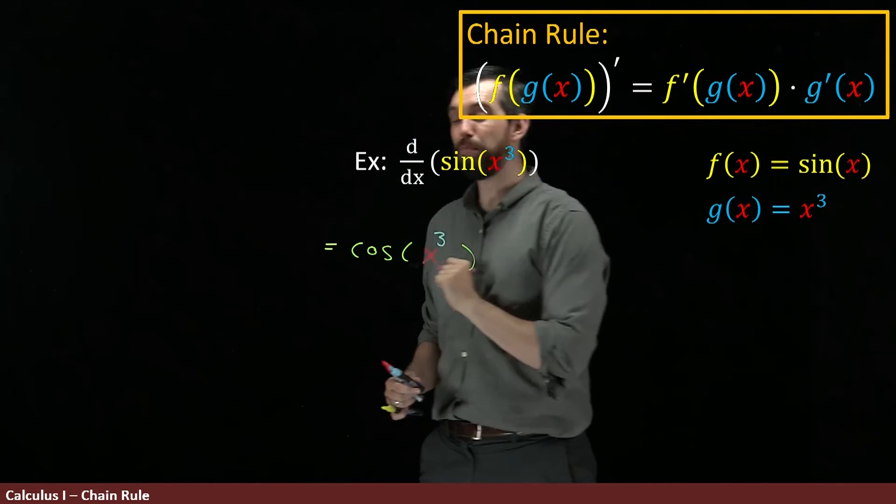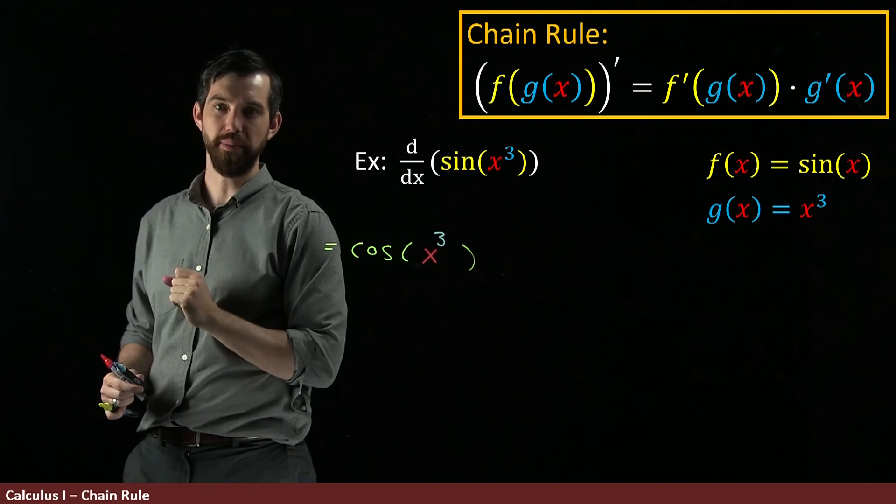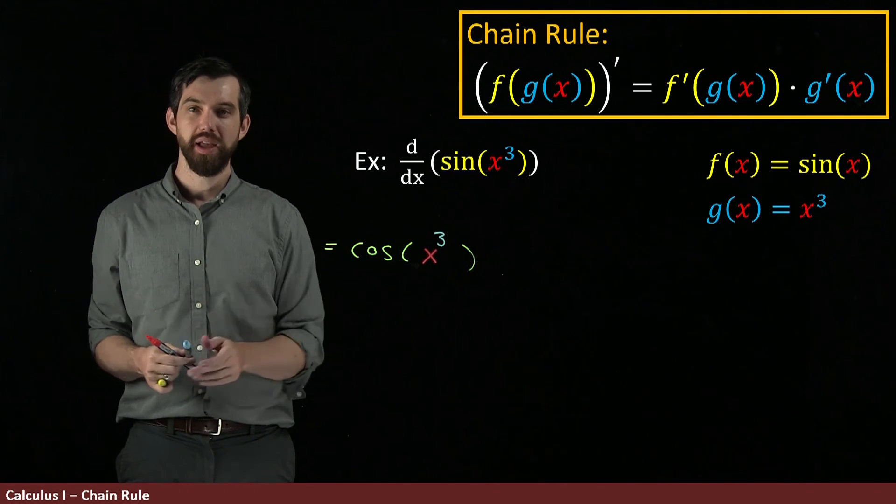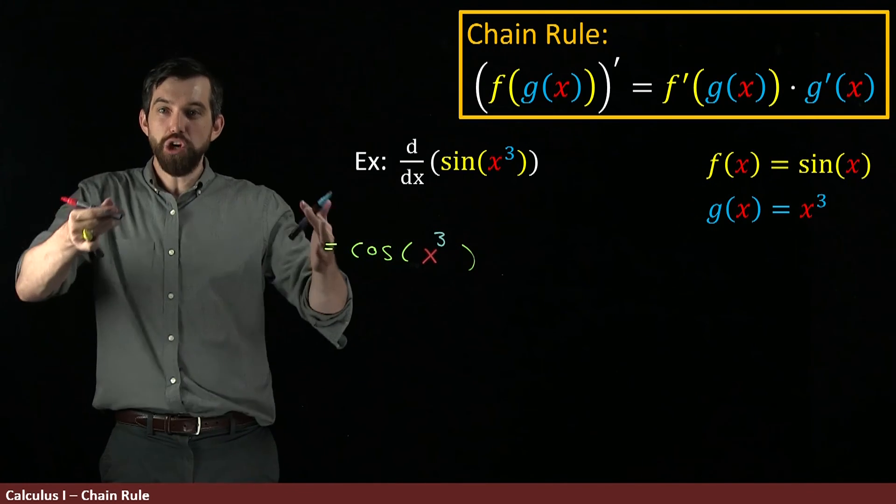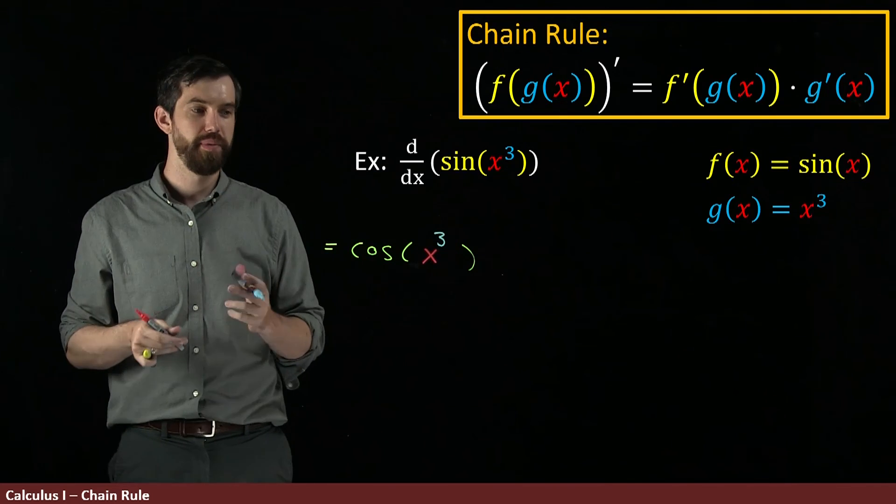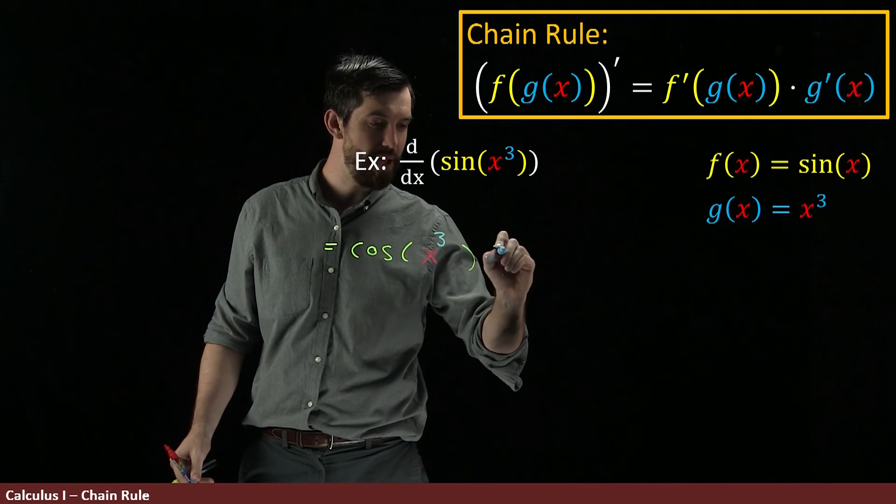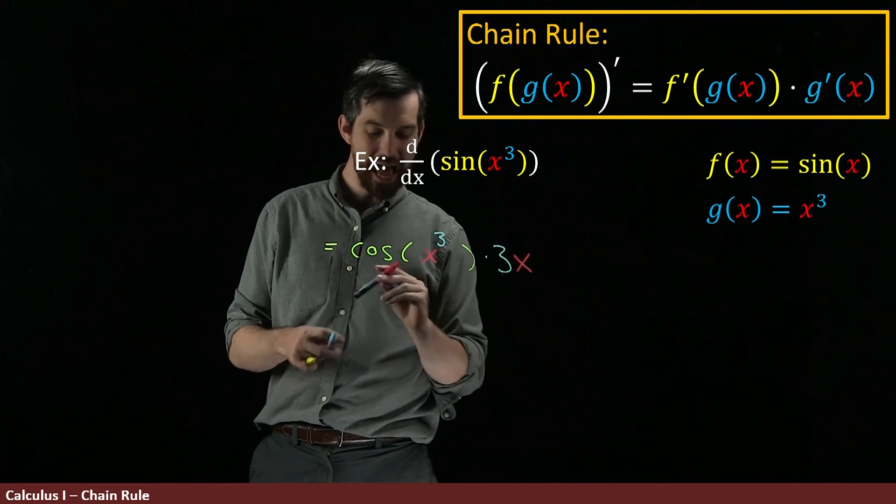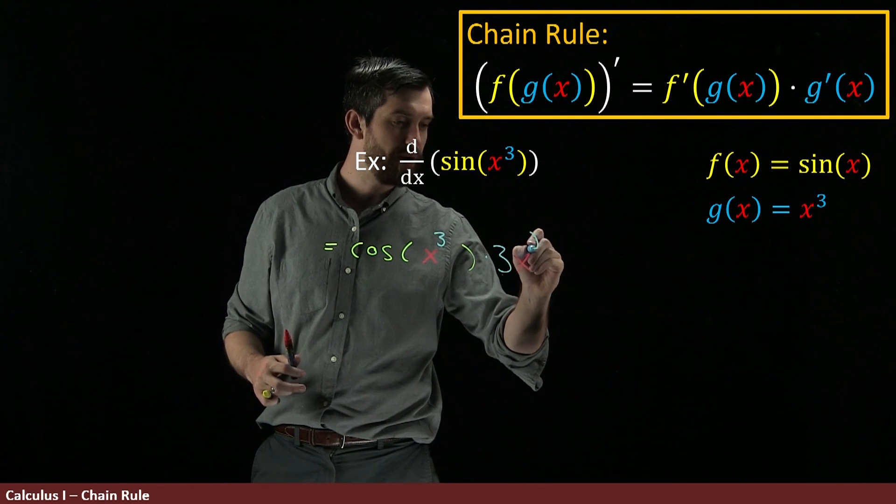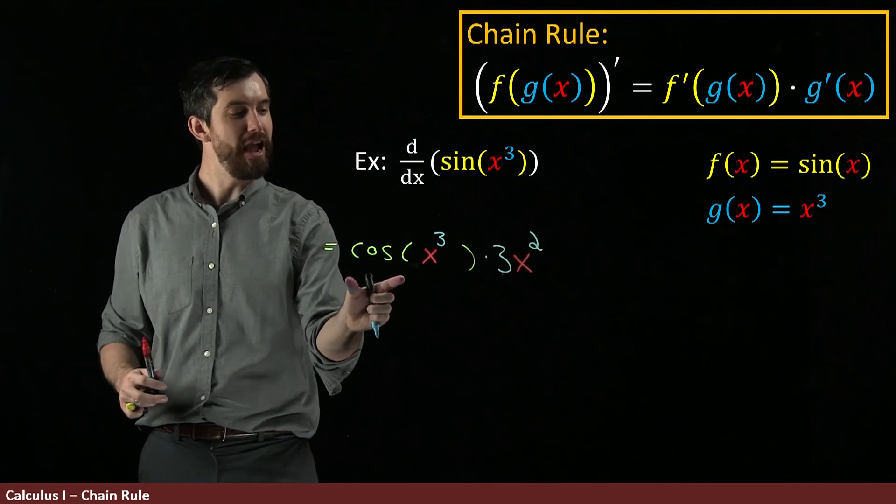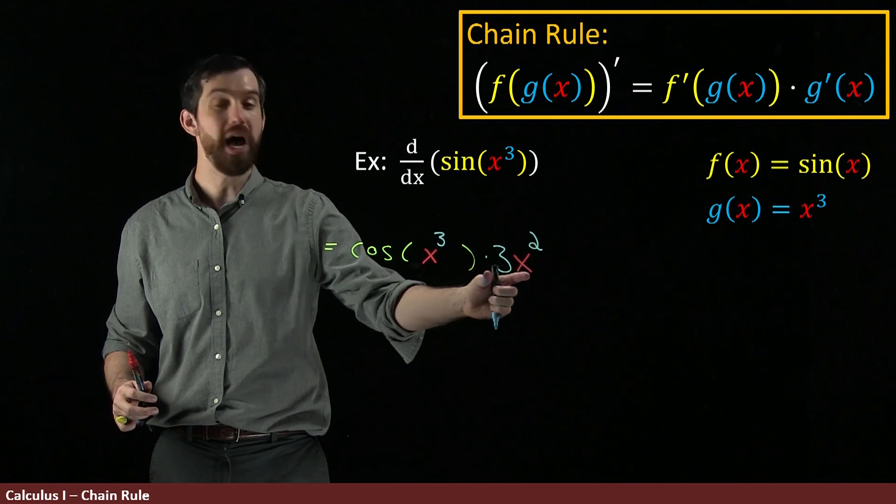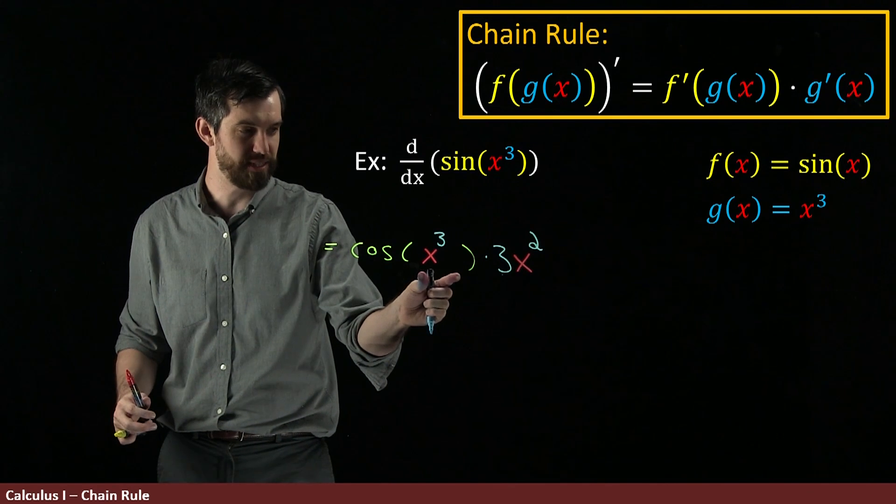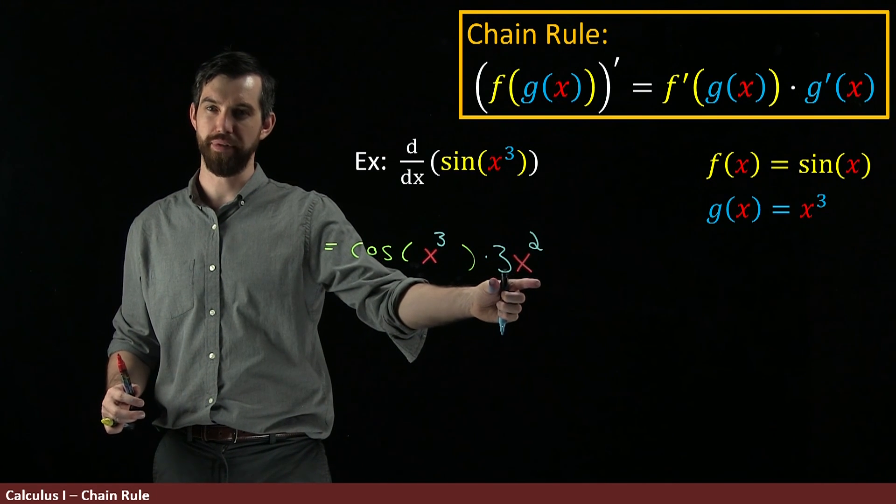So that gets me to the f prime of g of x, but I still have the g prime of x. Now g is this function, x cubed, and the derivative of x cubed is 3x squared. So I'm going to come along here and multiply by 3x squared. So I have my f prime g times my g prime, or the derivative of the outside at the inside, times the derivative of the inside.